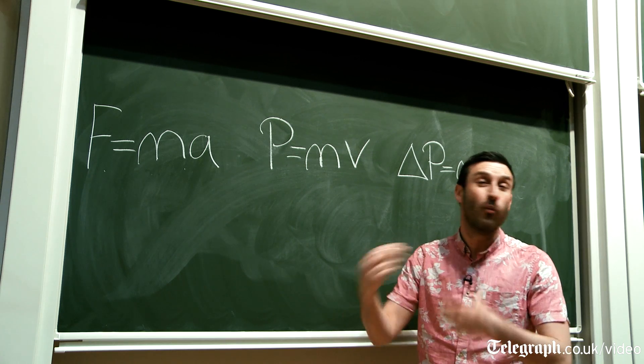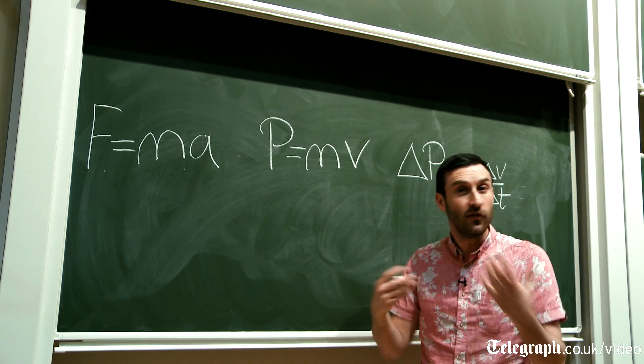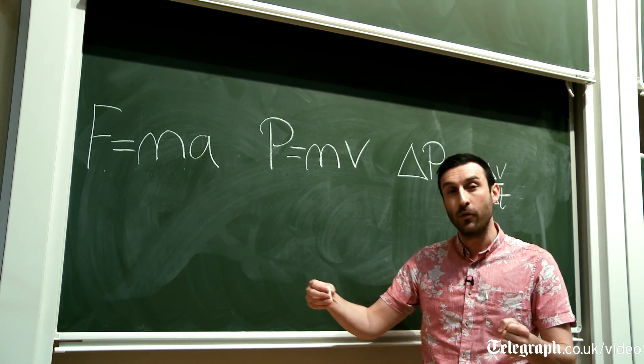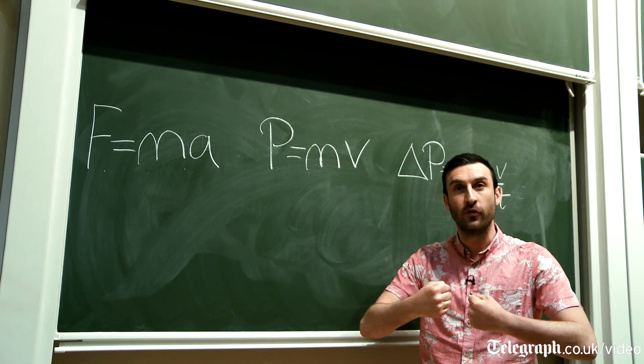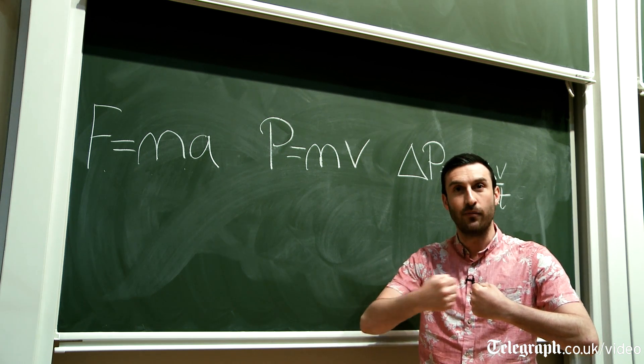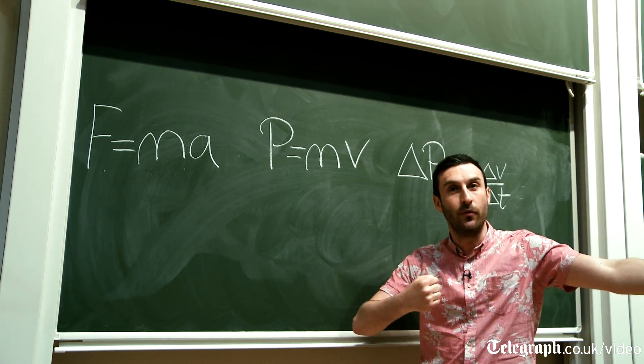Now a way that you might be familiar with is in snooker. You've got the white cue ball comes along, it hits the red ball, the cue ball stops moving, and it transfers momentum to the red ball, and that moves off.